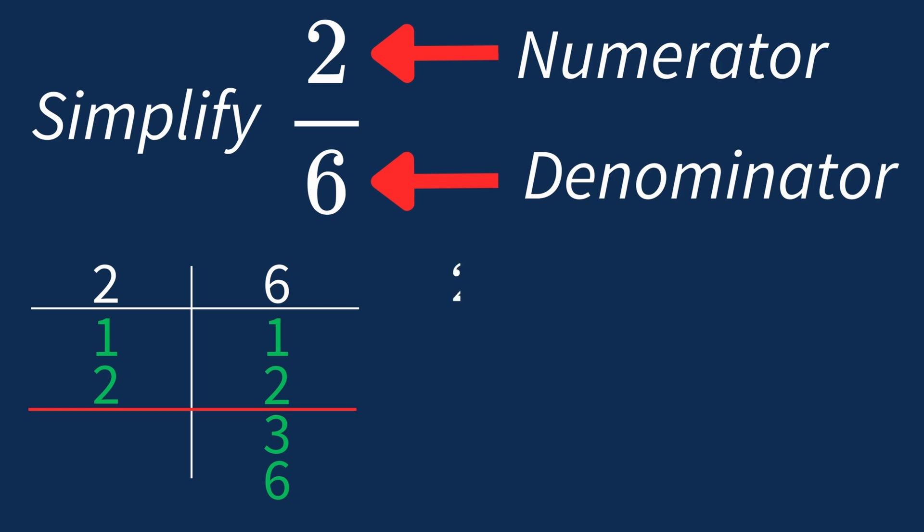Dividing the numerator 2 by 2 gives us 1. Then dividing the denominator 6 by 2 gives us 3. So after dividing both parts by the common factor 2, we're left with 1 on the top and 3 on the bottom.